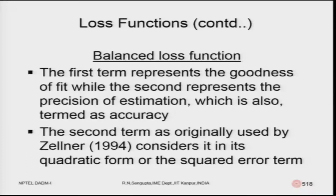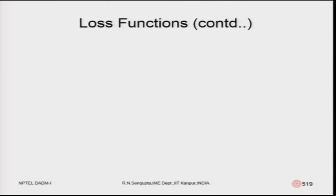The first term represents goodness of fit while the second term represents precision of estimation, also called accuracy. The second term, as originally used by Zellner, consists of its quadratic — squared error — form. So the balance loss function BLF with weight w considers both the goodness of fit with respect to y and y-hat, and the precision of estimation.